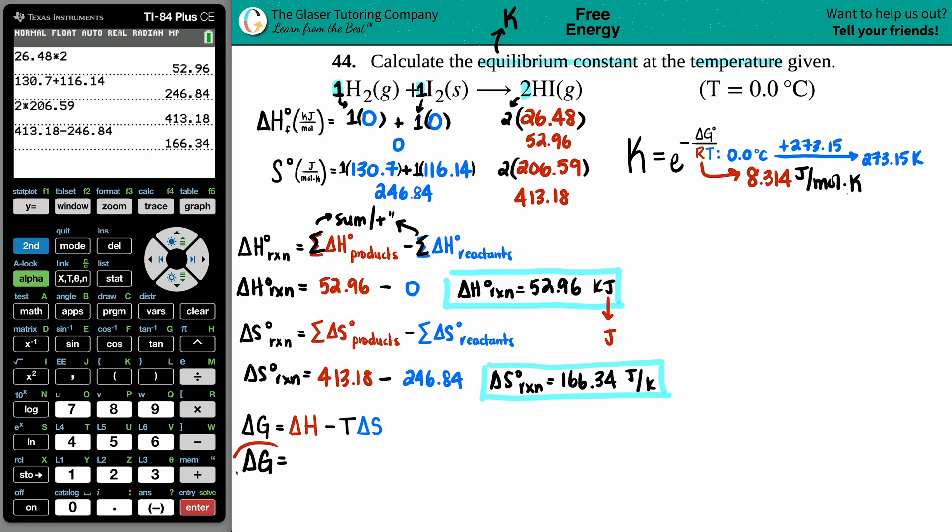The easiest thing is to take the kilojoule value and turn it into joules, because then I can find my delta G in joules and then I plug it in. Kilojoules to joules you times by a thousand. In this case it would be 52,960 joules, and that's the number that's going for the delta H.